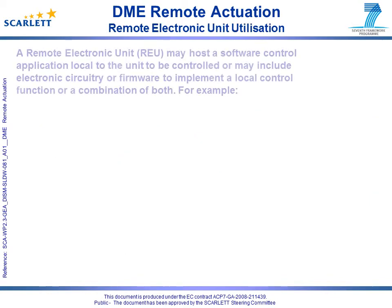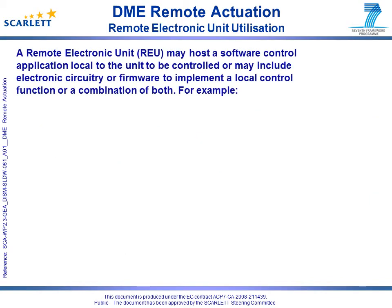A remote electronic unit, abbreviated to the term REU, may be used to provide control functionality in close proximity to a system's sensors and actuators, where network latencies prevent the control function from being located remotely in a core computing module.